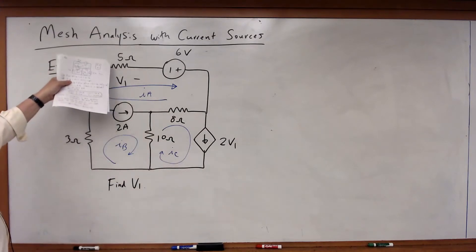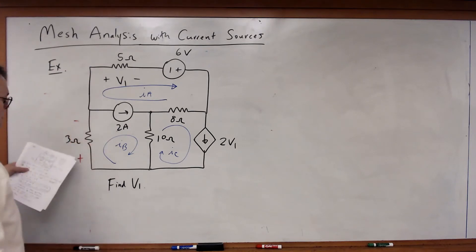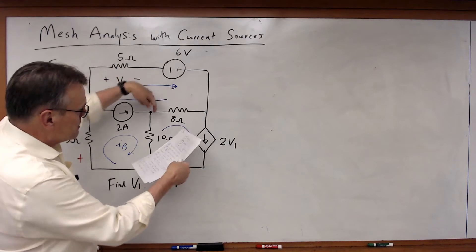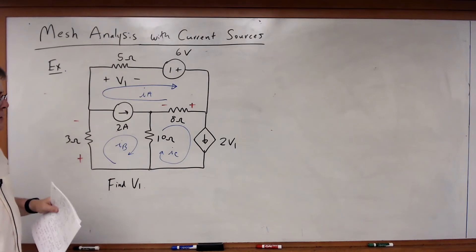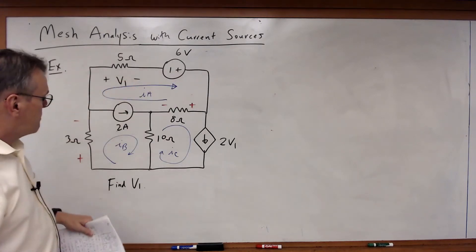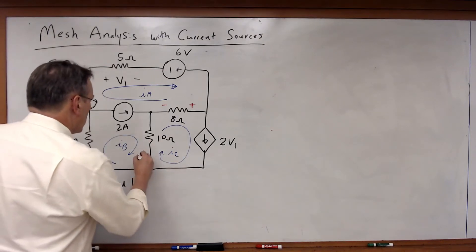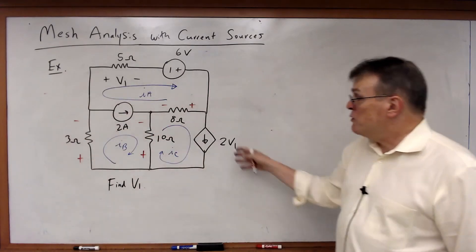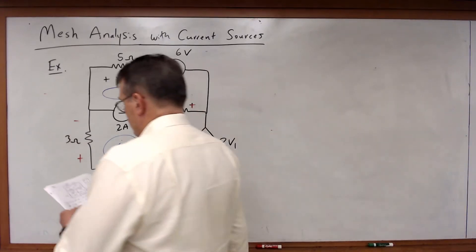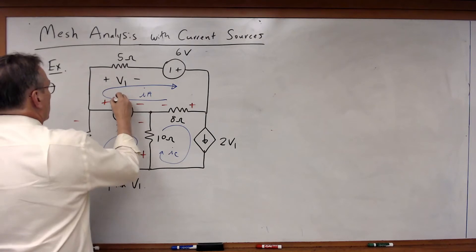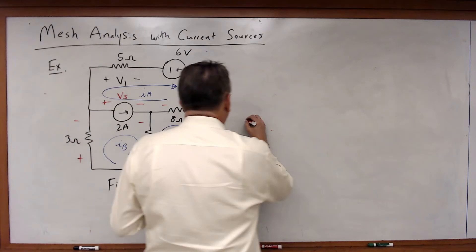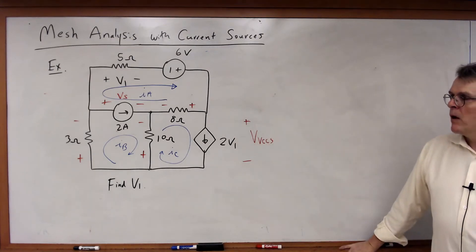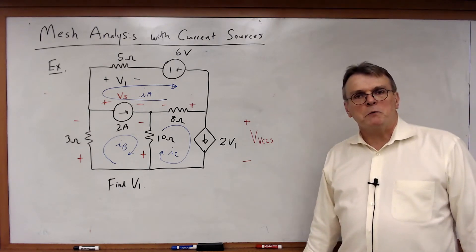Now let's define voltage drops across all resistors. For the 5-ohm resistor, V1 is already chosen. For the 3-ohm, I'll follow IB. For the 8-ohm, I've got two currents going in opposite directions — I can arbitrarily pick the polarity. Similarly, the voltage drop across the 10-ohm resistor is totally arbitrary. Because I have two current sources, I need to define voltages across them: I'll call them Vs and VVCCS for the voltage-controlled current source. Now I have all the elements I need — let's write the KVL plus Ohm's law equations.